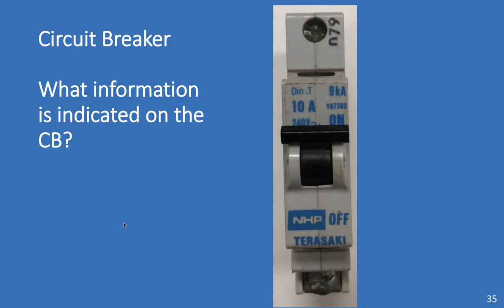Now here's a circuit breaker and what kind of information is indicated on the circuit breaker. So this is a Terasaki circuit breaker. It's just a single phase circuit breaker, very stock standard. And you can have a look. I'll give you a few seconds to have a look. It tells us that it's Terasaki. It tells us it is 240 AC. We've got the on position marked. The off position.